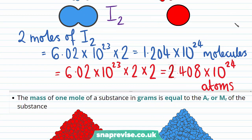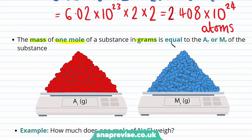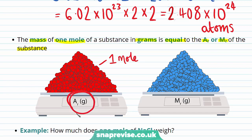A really useful feature of the mole comes from its definition, which is that the mass of one mole of a substance in grams is equal to either the relative atomic mass of an atom or the relative formula mass of a compound for whatever substance you're considering. For example, if we have one mole of an atom and we could weigh it, we would find that it would weigh the same as the relative atomic mass of that atom in grams. Similarly, for a molecule or a compound, one mole — 6.02 times 10 to the 23 particles — will weigh the same as the relative formula mass in grams.